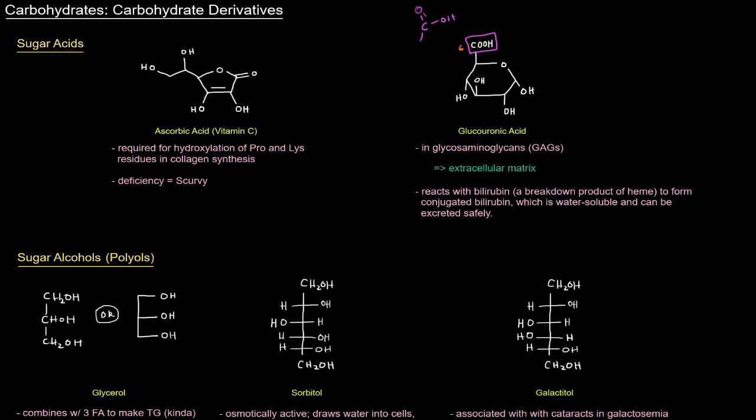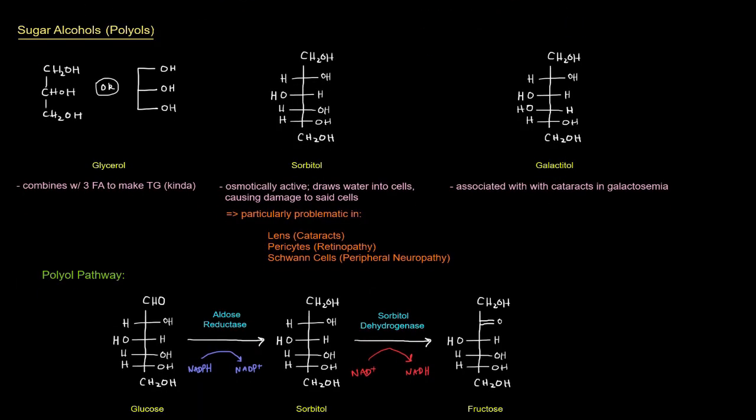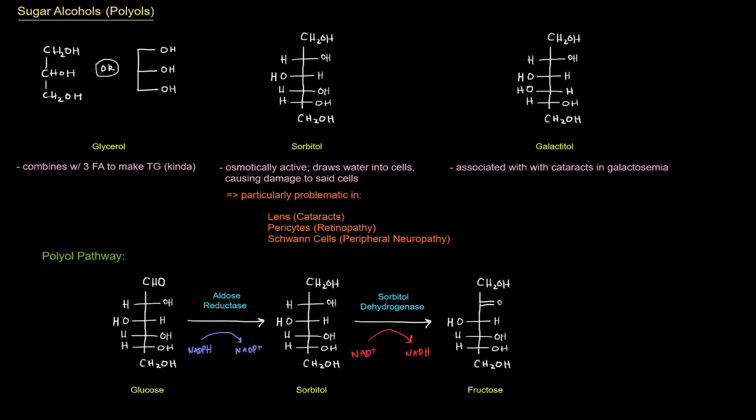Next up, sugar alcohols or polyols. So, here we've got glycerol. Very similar in structure to glyceraldehyde, which we saw earlier. Instead of an aldehyde up top here, it's just an alcohol. And it can also be represented like this, where each vertex represents a carbon and the hydrogens are implied.